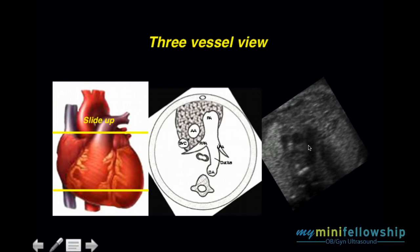Here we see a sonographic representation of the three-vessel view: SVC, ascending aorta, and pulmonary artery. In this instance, the branch visible is the ductus arteriosus going back to the descending thoracic aorta, sitting just in front of the spine. So: SVC, aorta, pulmonary artery, ductus arteriosus.